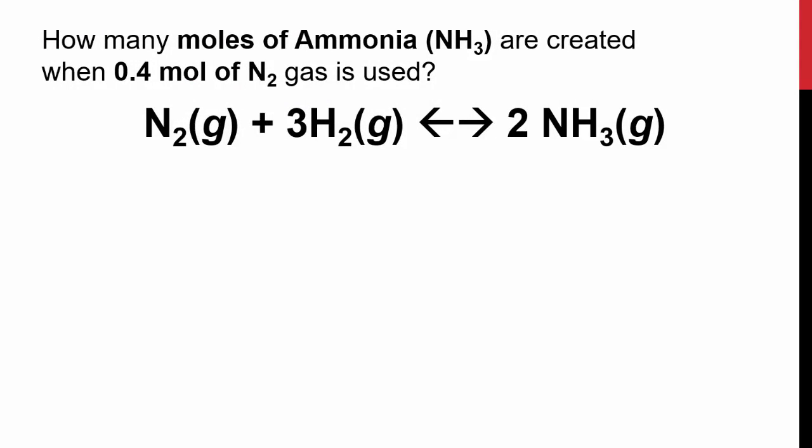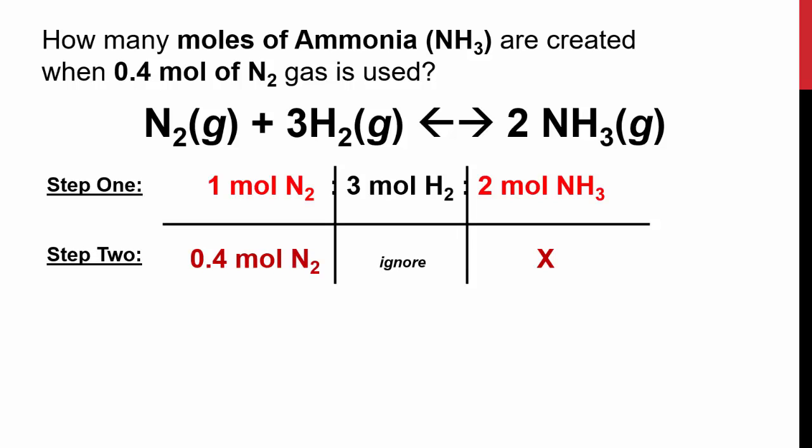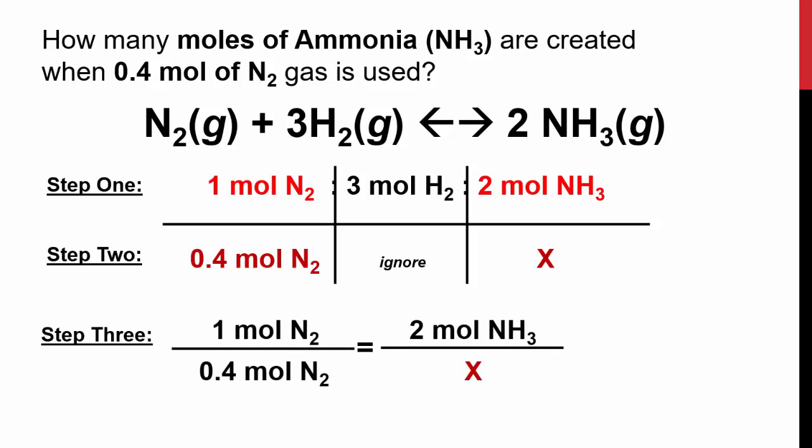In our Haber process, we're noticing that we're taking nitrogen plus 3 moles of hydrogen, and it's going to give us 2 moles of our product. How many moles of ammonia, which is NH3, are created when 0.4 moles of nitrogen is used? The first thing we do is we analyze our balanced formula. We have a 1 to 3 to 2 ratio. The second step is to analyze and say which are the things that we're going to be talking about. We're looking at nitrogen because it's in the question, and we're also looking at ammonia because it's in the question. When we make proportions, we are going to be ignoring all the information about hydrogen. We're going to pretend it's not even there. If you can see it already, we already have our proportions given to us.